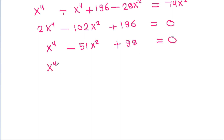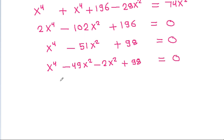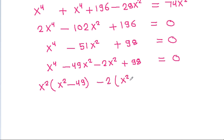Factoring: x to the power 4 minus 51 x squared plus 98 equals x to the power 4 minus 49 x squared minus 2 x squared plus 98, which factors as x squared times (x squared minus 49) minus 2 times (x squared minus 49) equals 0.